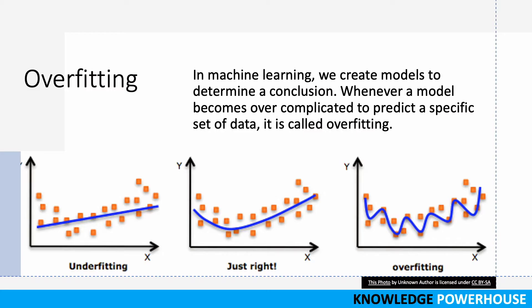Why is being too complicated a problem? The problem is that when we take this function and try to predict on a new dataset, it doesn't predict as accurately. That is the core issue with overfitting.